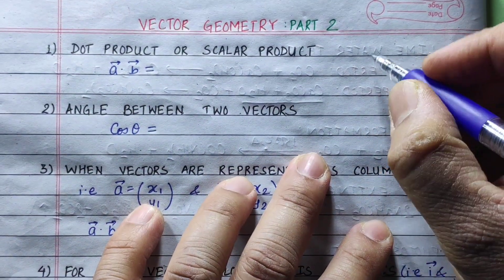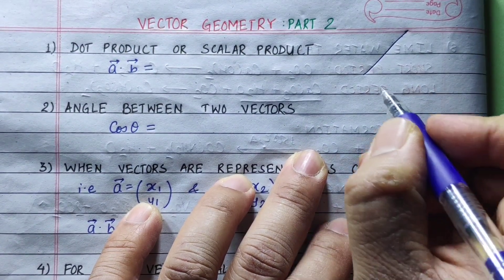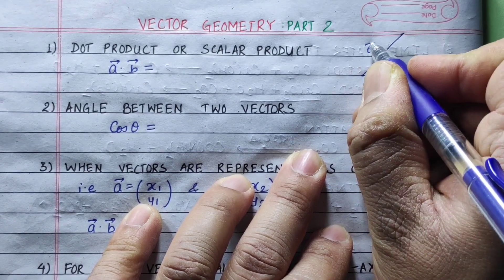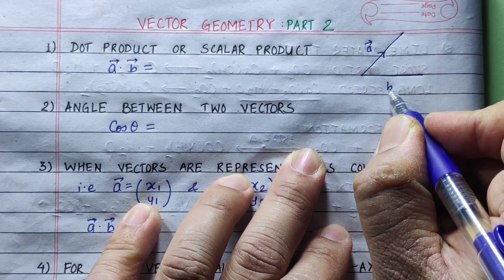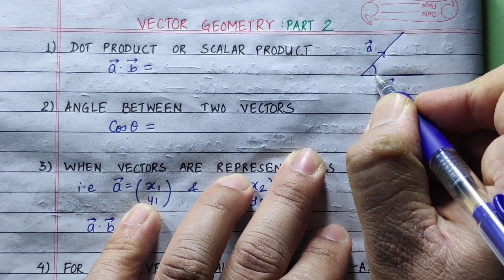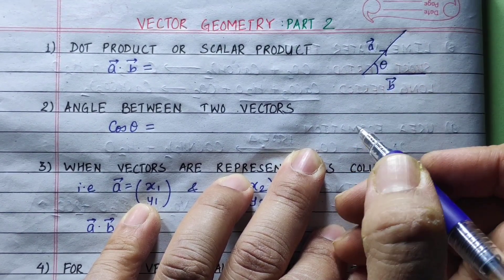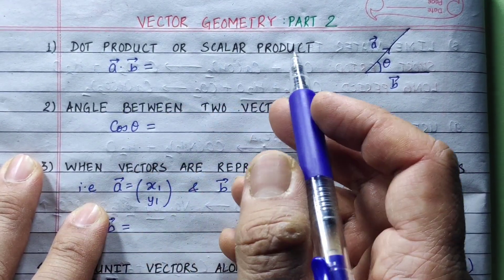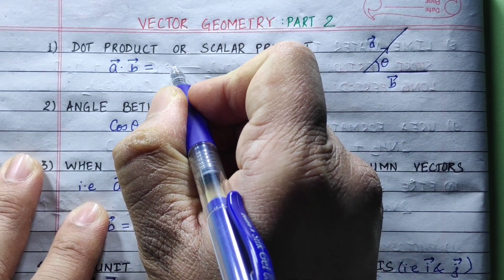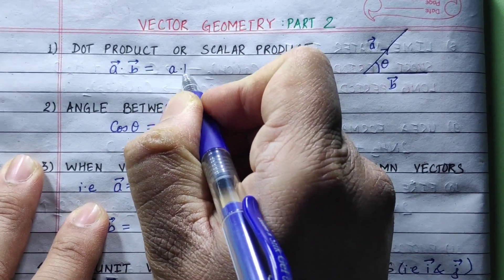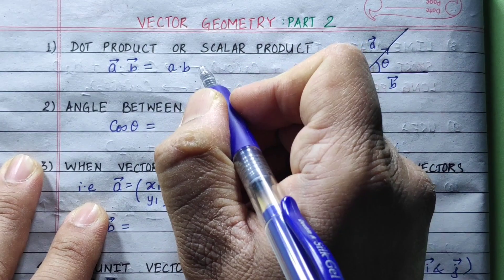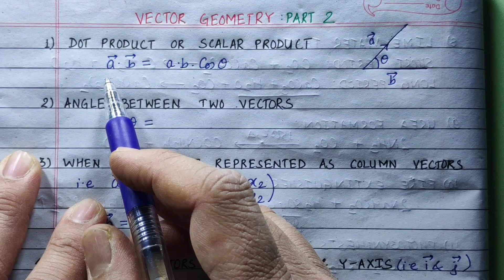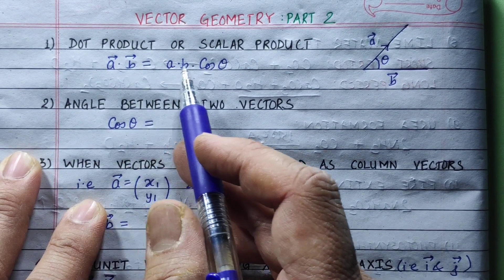We are going to talk about two vectors. Suppose we are using vector A and vector B. The angle between them is theta. Then the dot product or scalar product is the magnitude of A times the magnitude of B times cosine of the angle between them: vector A dot vector B equals AB cos theta.